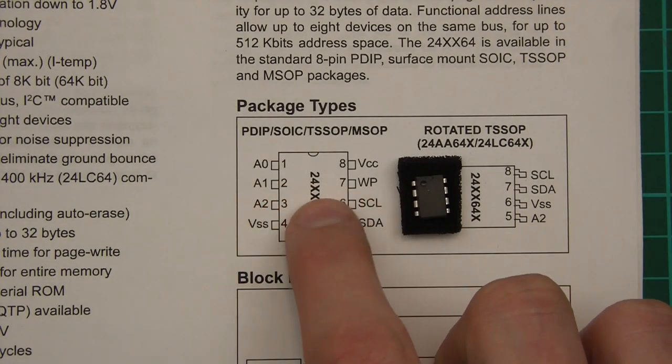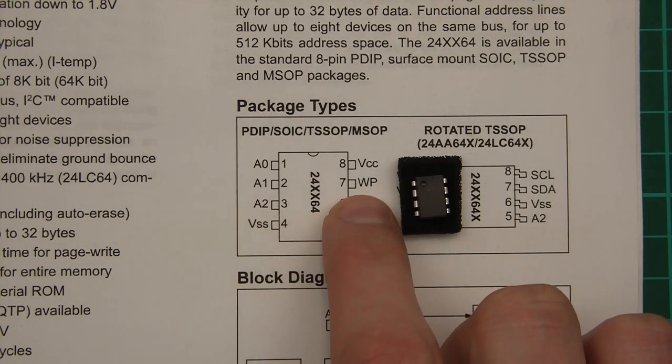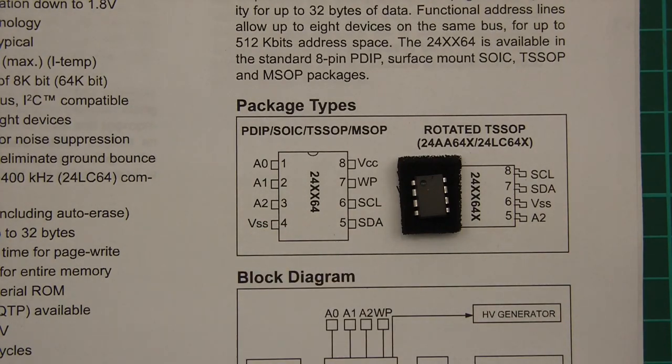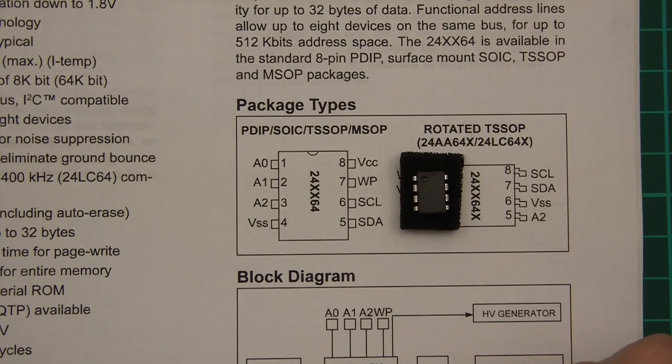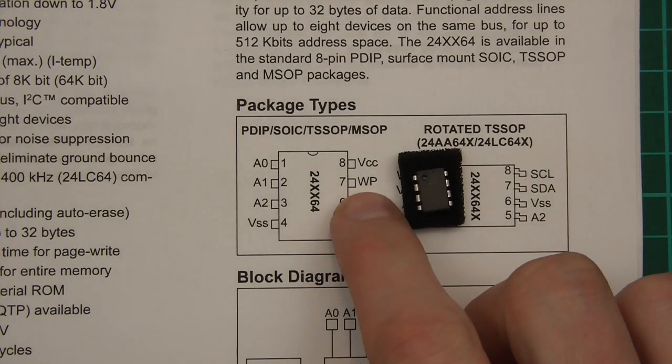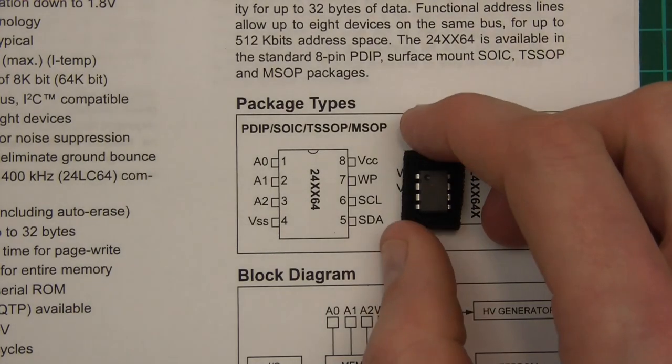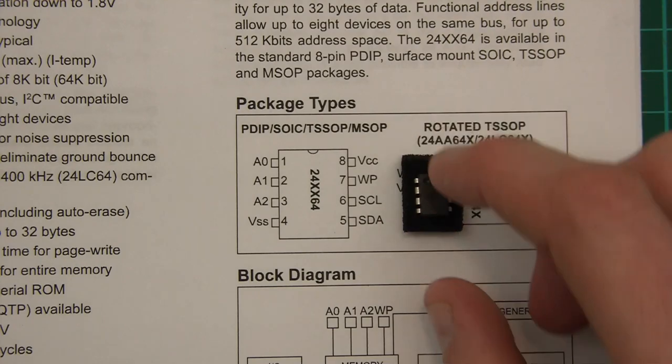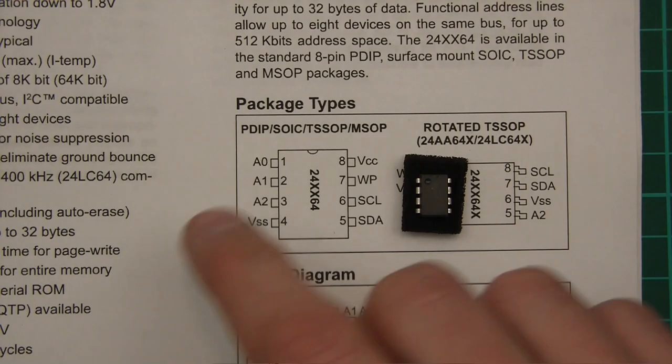Now, so that leaves us with 4 that we're not familiar with. That's A0 to A2 and WP. And A0 to A2 are address inputs, if you like, to this little chip to give it its address. I'll explain more about that in a few seconds. And WP is write protection. And if you hold WP high, it prevents you from writing to the chip.